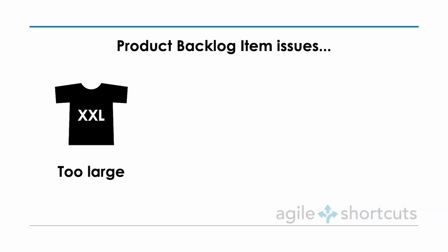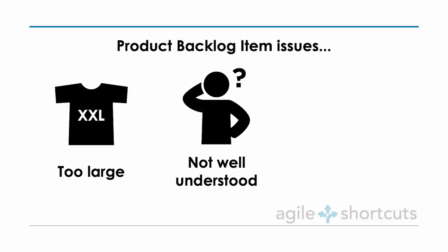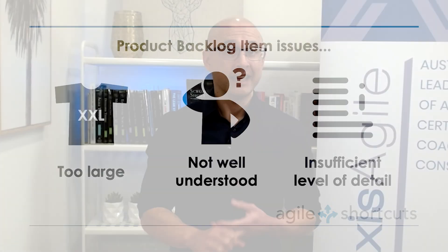This is the fourth video in a series on helping your team complete their sprint plan. If you missed any of the previous videos, you'll find links in the description below. In the last video, one of the key reasons teams don't complete their sprint plan was identified as poor product backlog refinement, which leads to items that are too large, not well understood, or not sufficiently detailed.